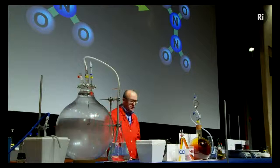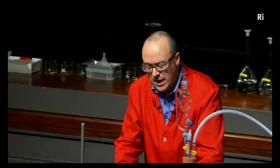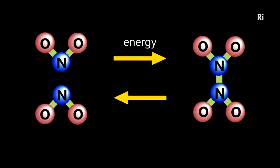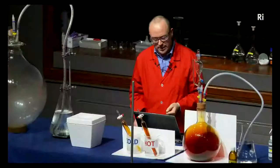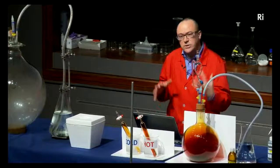But the dinitrogen tetraoxide can split up — the molecule can split in half to give two molecules of nitrogen dioxide. Because for every molecule of dinitrogen tetraoxide we get two molecules of nitrogen dioxide, we have twice as many molecules that can be arranged in many more ways, meaning the entropy has increased. So entropy tends to drive this reaction in the reverse direction. These two effects — the ball rolling downhill effect and the teenager's bedroom effect — drive the reaction in opposite directions, so the reaction goes in both directions at the same time and reaches a sort of balance — an equilibrium — where some nitrogen dioxide and some dinitrogen tetraoxide are both present.